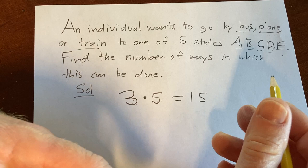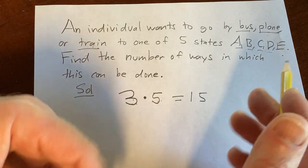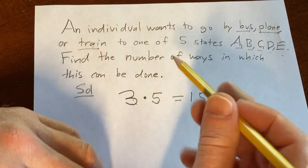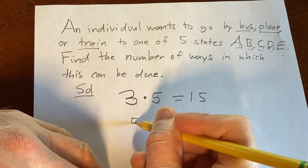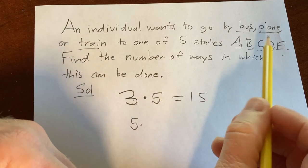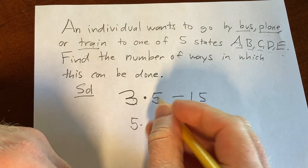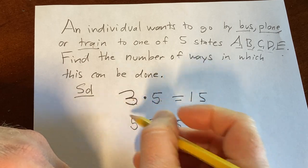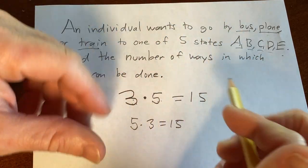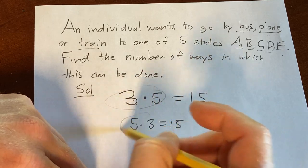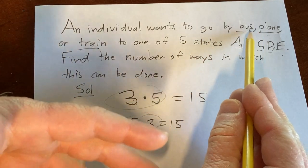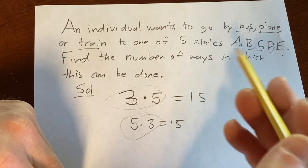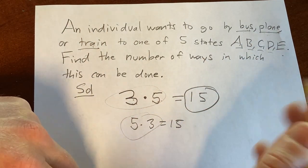Now you could have thought of it differently. You could have said instead you want to decide which state to go to first. Well there's five ways to pick a state, and for each of these states there's three choices for a mode of transportation, so times three, which is equal to 15. But these are exactly the same ideas, because the possibilities are still the same — there's still 15 possibilities in either case. So the answer is 15.